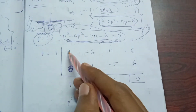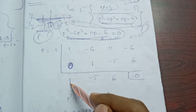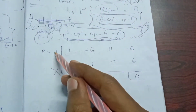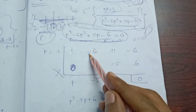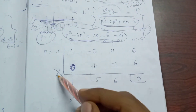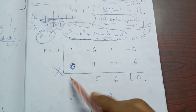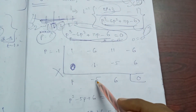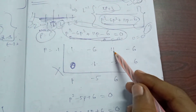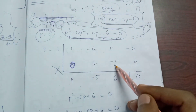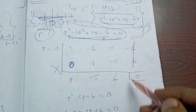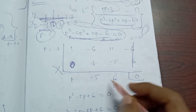1 plus 0 is equal to 1. Then 1 into 1 is equal to 1. Minus 6 plus 1 is equal to minus 5. Minus 5 into 1 is equal to minus 5. 11 minus 5 is equal to 6. 6 into 1 is equal to 6. Plus 6 minus 6 is equal to 0.